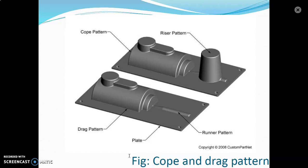You can see in this figure we have two parts. The upper part is known as the cope and the lower part is known as the drag. The riser is attached to the cope, and the runner is attached to the drag. This arrangement means it can be easily removed from the main component. So these are the two separate parts.